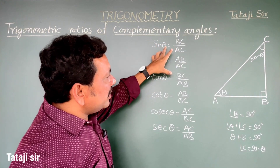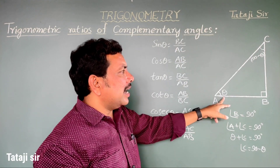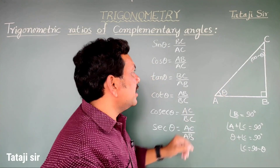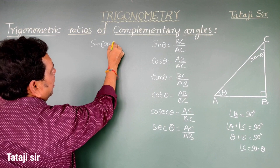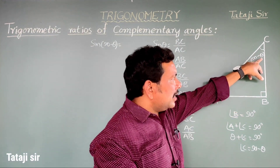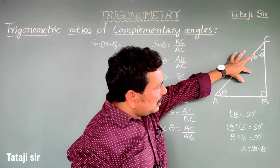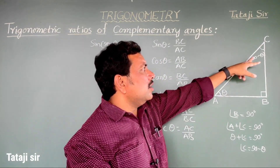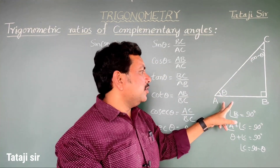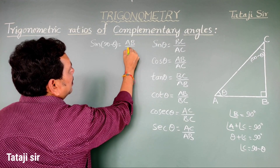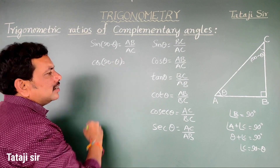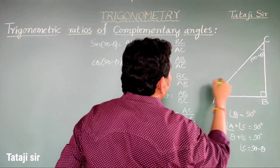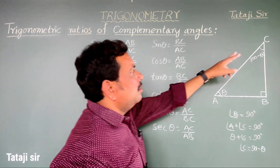Now let's define trigonometric ratios for 90 minus theta. Sine of 90 minus theta: the opposite side is AB and hypotenuse is AC, so it equals AB by AC. Cos of 90 minus theta: the adjacent side is BC and hypotenuse is AC, so it equals BC by AC.